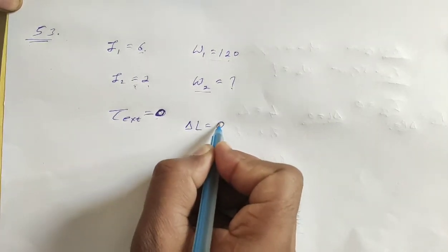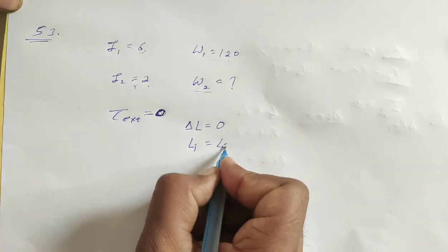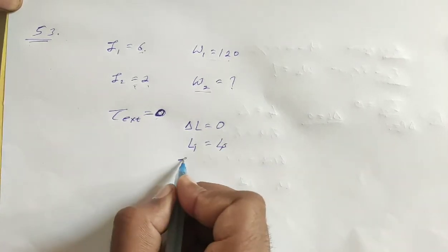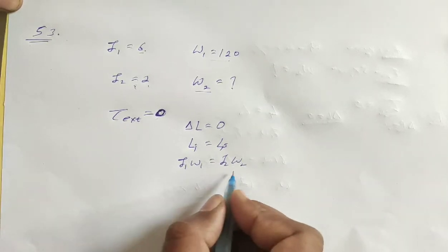Angular momentum is conserved. Change in angular momentum is zero. Initial angular momentum is equal to final angular momentum. Initial angular momentum is I1 omega 1, I2 omega 2 is final angular momentum.